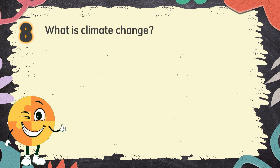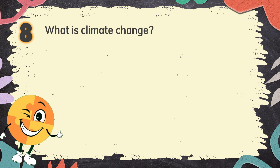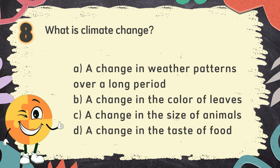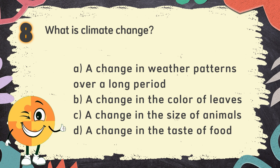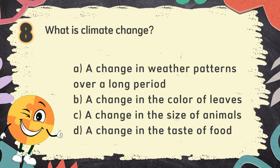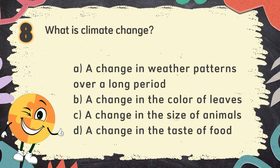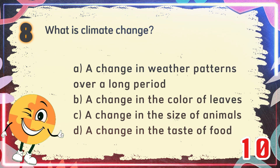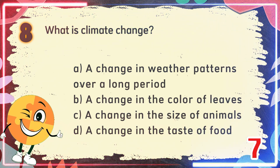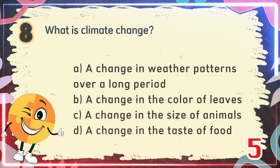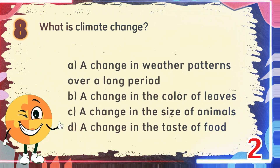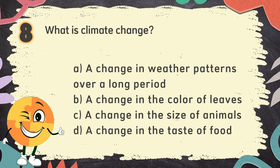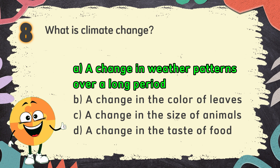Number 8. What is climate change? The choices are A. A change in weather patterns over a long period, B. A change in the color of leaves, C. A change in the size of animals, D. A change in the taste of food. The correct answer is A. A change in weather patterns over a long period.